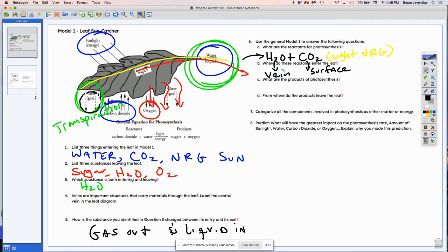What are the products of photosynthesis? The products are oxygen and sugar. And from where do these products leave? Well, oxygen leaves through the leaf and sugar leaves through the vein.